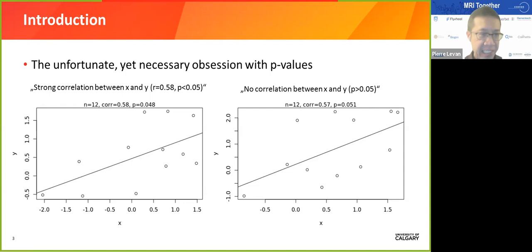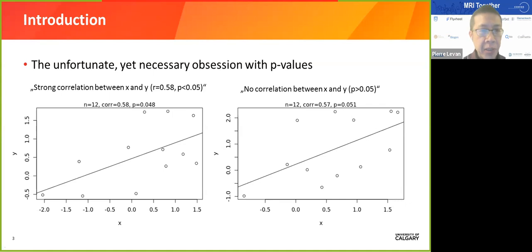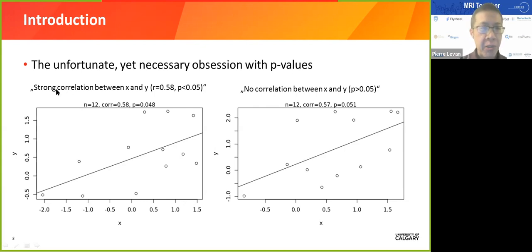I like to work with small sample sizes because it makes it easier to visualize the data and individual data points. On the left side you can see an example: you're correlating two variables x and y with 12 data points, trying to figure out whether there's a correlation. You get a correlation of 0.58 and a p-value of 0.048, so you're really happy and you report a strong correlation between x and y, p less than 0.05.